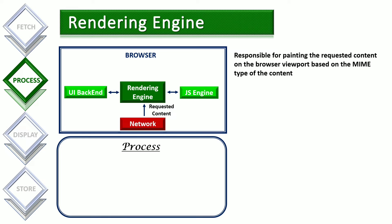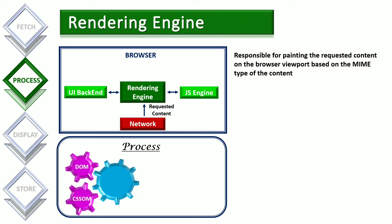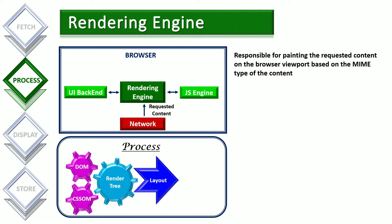If the server response is HTML, the rendering engine will first create the Document Object Model (DOM) from the HTML file. Then it will create the CSS Object Model (CSSOM) from the CSS file. Then the DOM and CSSOM are used to construct the render tree, which contains only the visible elements of the HTML. Once the render tree is constructed, the layout operation will calculate the size and position of each element in the render tree.